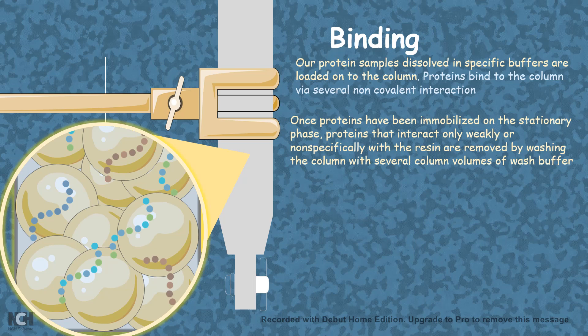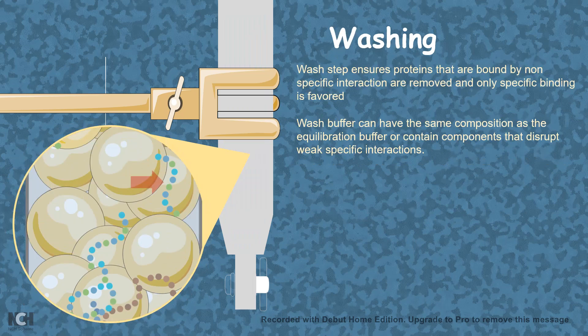Now there are also weak and non-specific bindings which you can get rid of by a washing step. You wash those with a specific wash buffer which can denature the weak interactions but retain the strong interactions. By that you can get rid of all the non-specific binding and they are washed away.